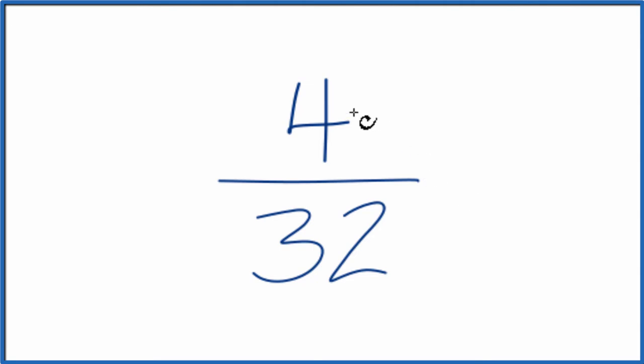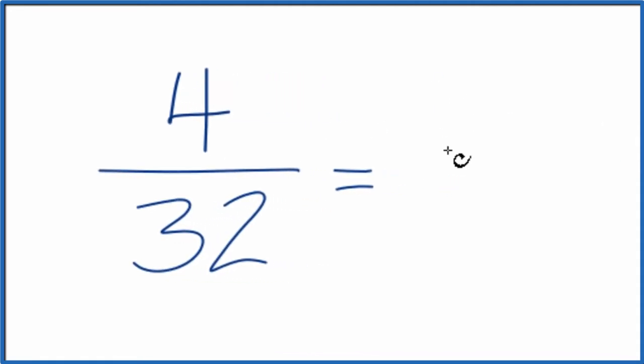To do that, if you know that 4 goes evenly into 32, you can do it pretty quickly. We divide the top by 4. 4 divided by 4 is 1, and 32 divided by 4 is 8. So simplifying 4 32nds, we get 1 eighth. We can't reduce this any further.